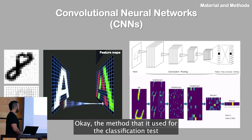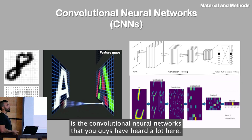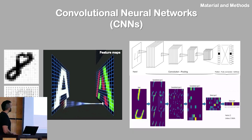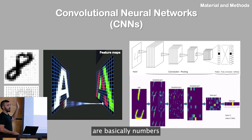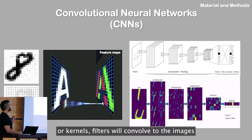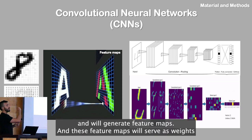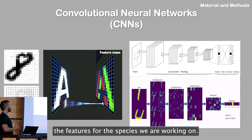The method I used for the classification task is convolutional neural networks, which you've heard a lot about here. This is a classification model for image classification. Images are basically numbers, and these convolutional neural networks use layers with several filters or kernels. The filter convolves with the image and generates a feature map, and this feature map serves as weights that essentially save the learned filters for the species we're working with.